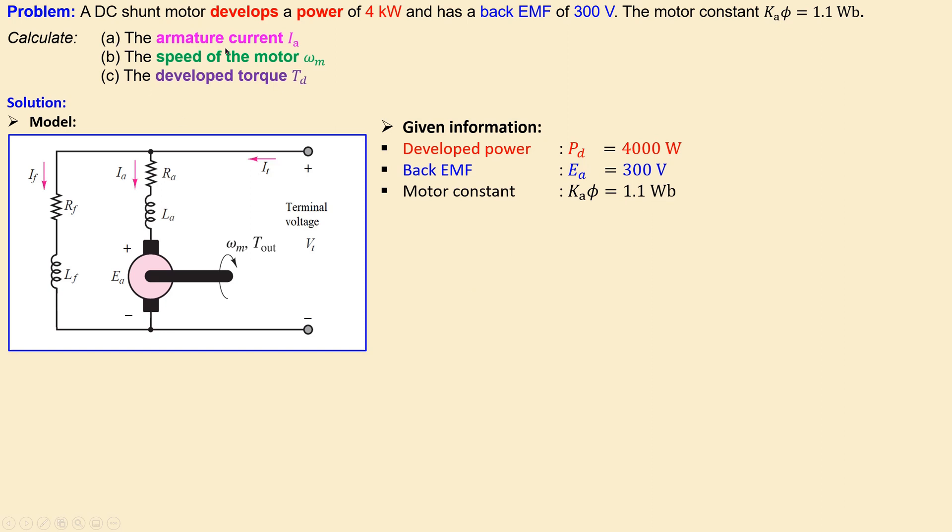So let's first start with the armature current. So for that we can use the formula for developed power. Developed power for this DC shunt motor is equal to the armature current which is flowing here times the back EMF voltage.